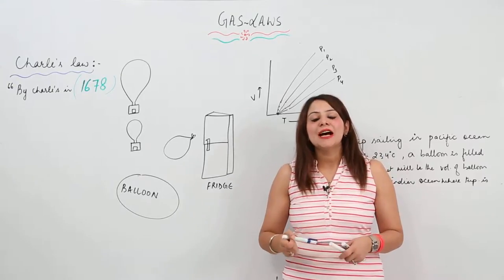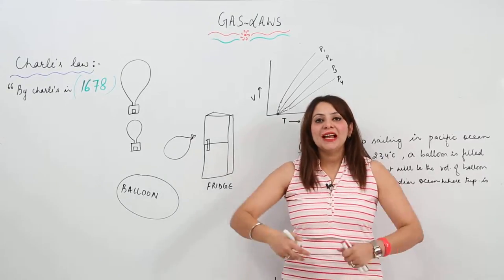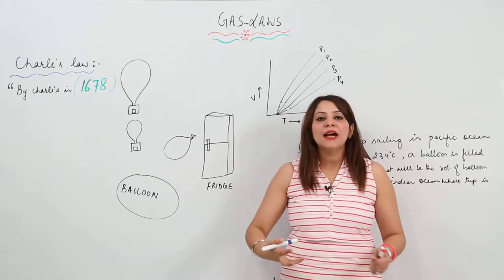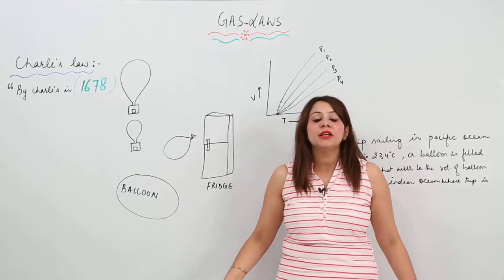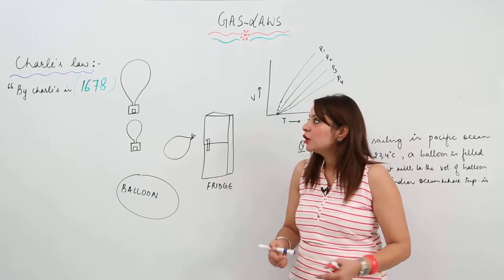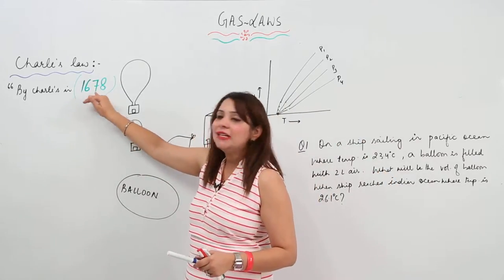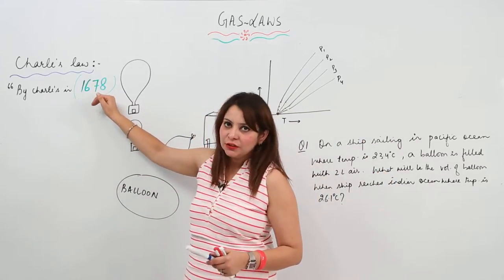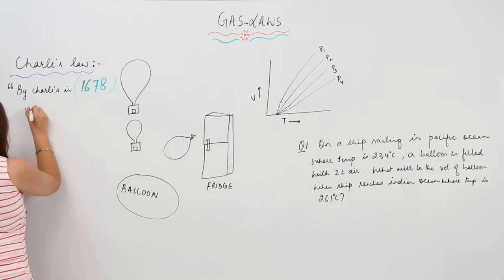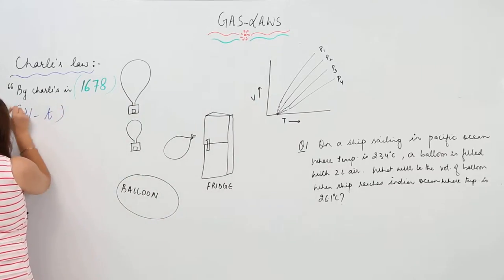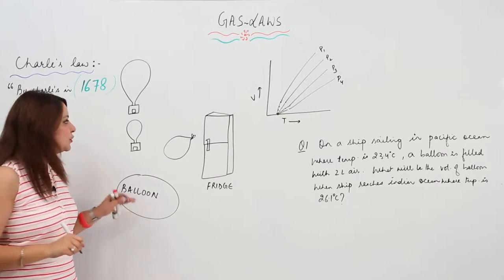We are going to start with Charles's Law. First of all, we would like to know who gave this law and when, and what information it is trying to give us. It was given by Charles in 1787. It is actually a volume-temperature relationship.